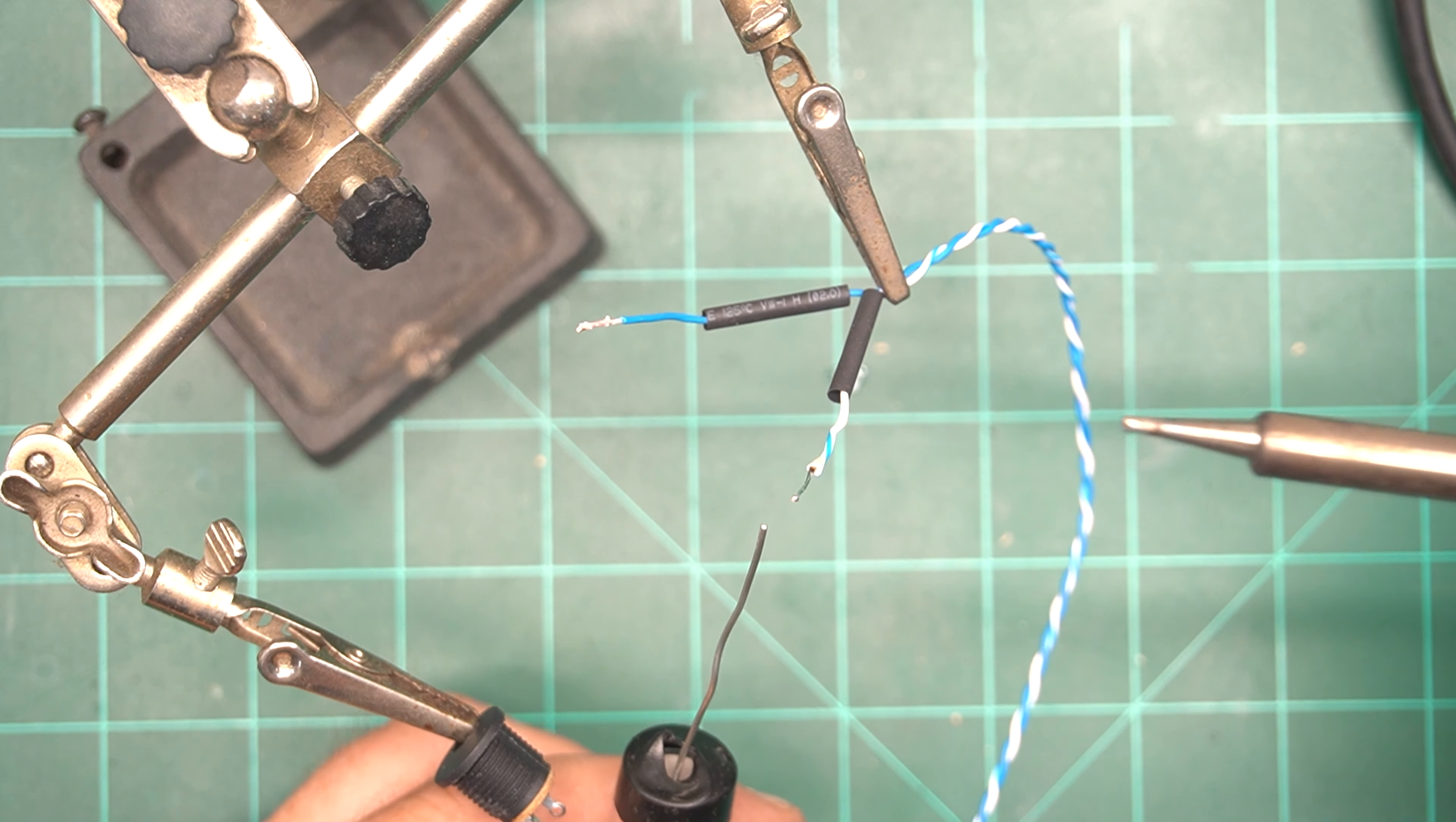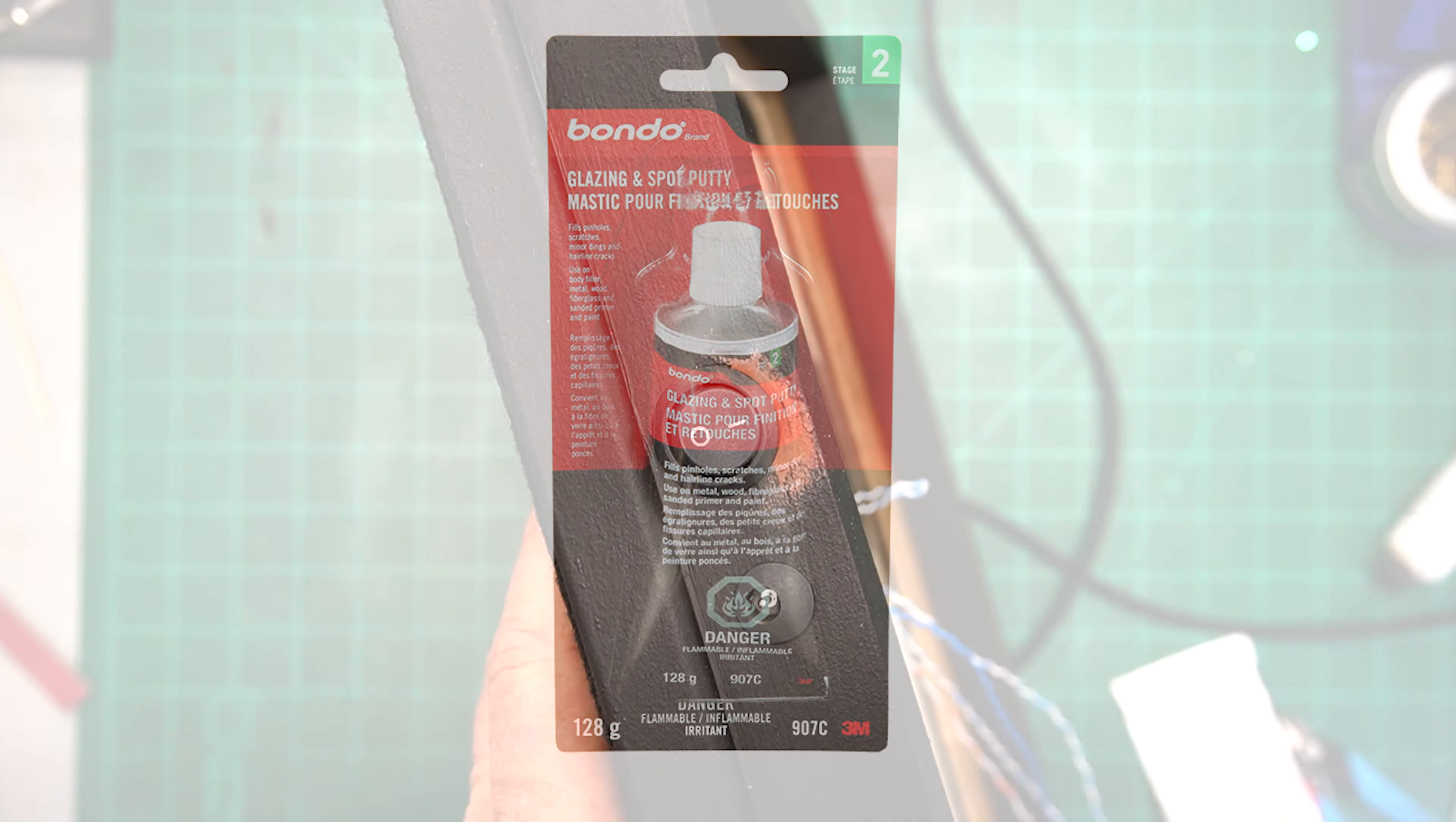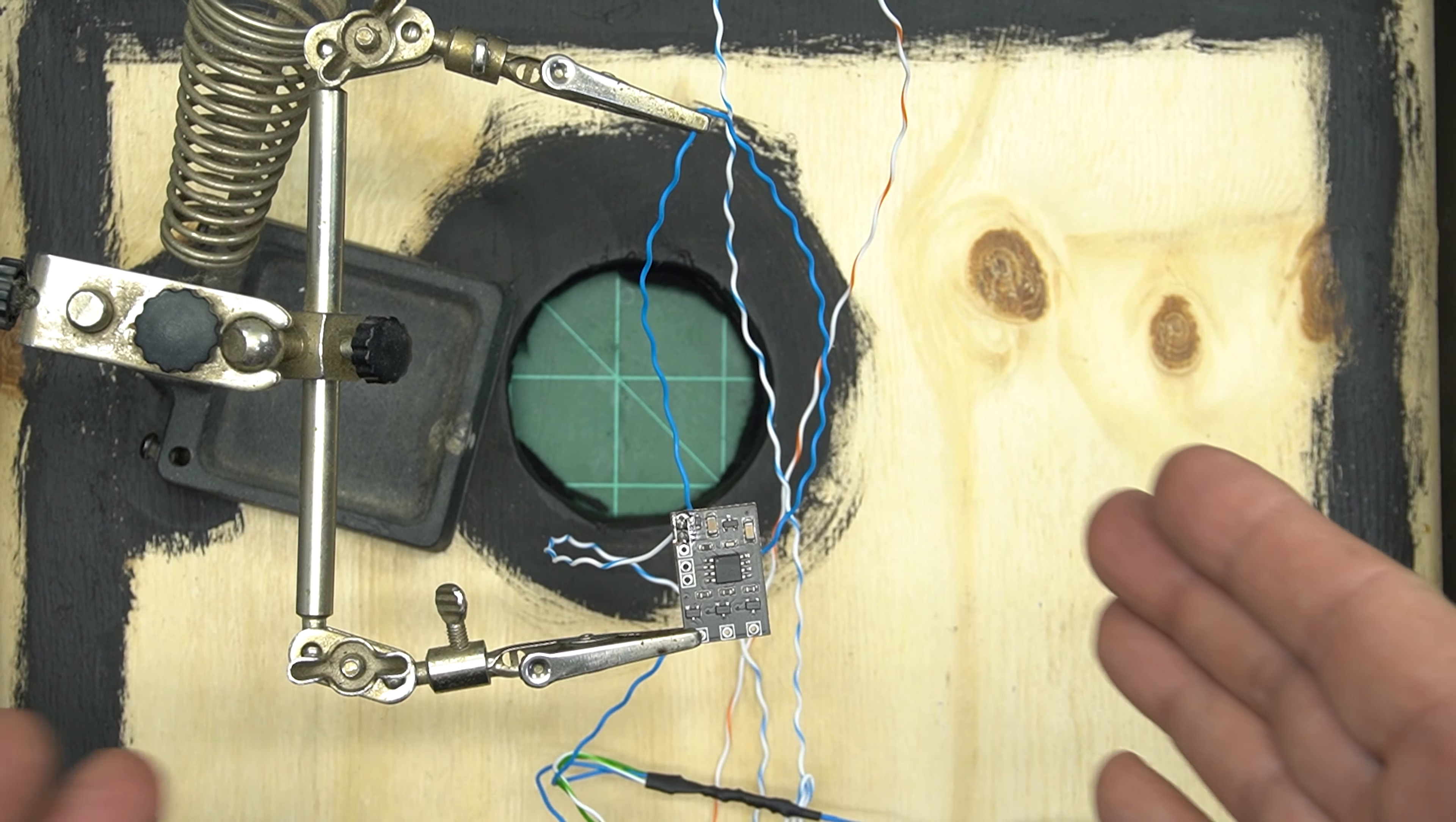I have the on-off switch all wired up. We need multiple wires to go to different things. One is for our effects. One is for our board and one is for our standard lighting or our static lighting.